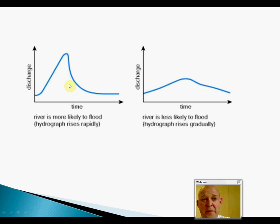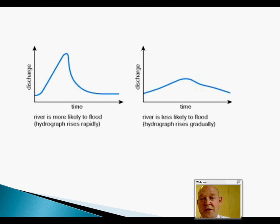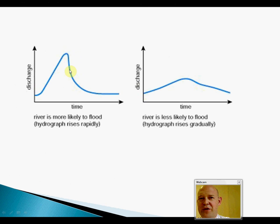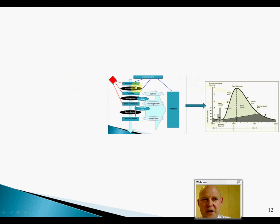Here are two contrasting hydrographs from AQA. The prolonged one could reflect a February scenario in Britain where rain throughout the preceding months has raised the water table to the surface, preventing infiltration and causing overland flow. Adding a big storm on top produces the flashy response overlaid on the prolonged one — a compound problem. Interestingly, one hydrograph shows a near-instant drop in discharge, almost like the Severn Bore, a wild pulse of water passing through.